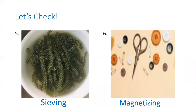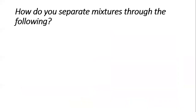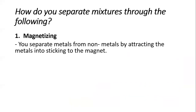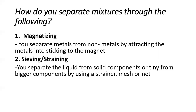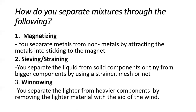If you got six, that means you're doing really, really great. Now let's continue. How do you separate mixtures through the following? Magnetizing: you separate metals from non-metals by attracting the metals to stick to the magnet. Sieving and straining: you separate liquid from solid components, or tiny from bigger components, by using a strainer, mesh, or net. Winnowing: you separate lighter from heavier components by removing the lighter material with the aid of wind, so the heavier material is left behind.